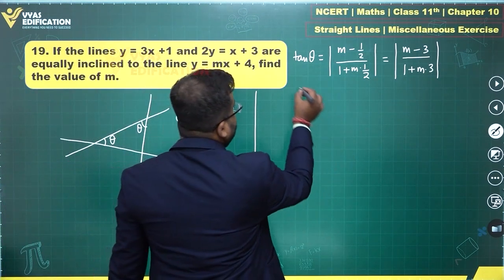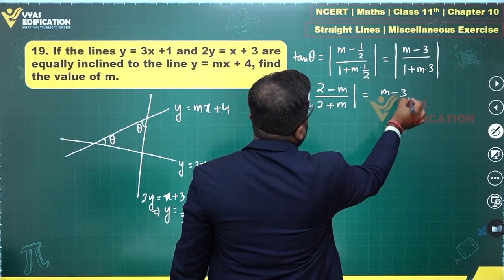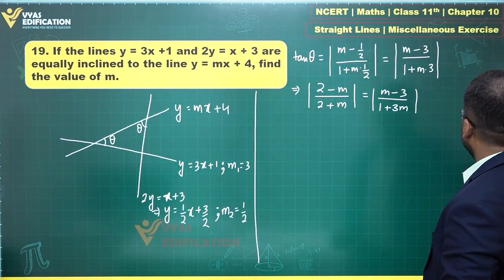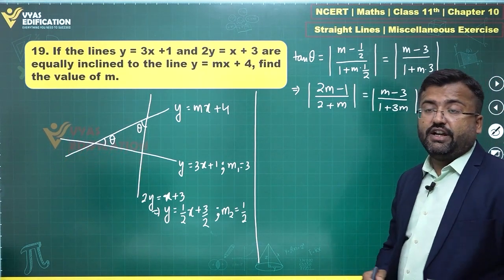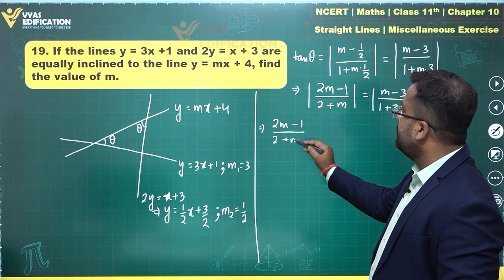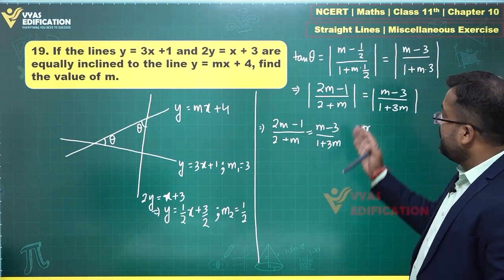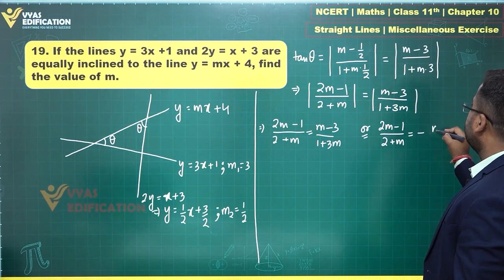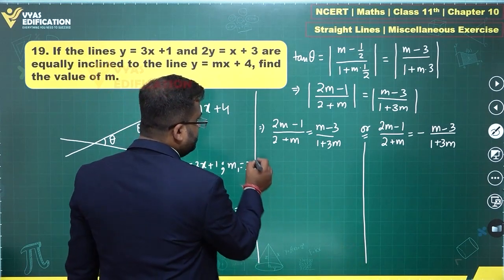Rewriting: multiply numerator and denominator by 2, giving |(2m − 1)| / |(2 + m)| = |m − 3| / |1 + 3m|. Since the magnitudes are equal, either (2m − 1)/(2 + m) = (m − 3)/(1 + 3m), or (2m − 1)/(2 + m) = −(m − 3)/(1 + 3m). These are the two equations to solve.